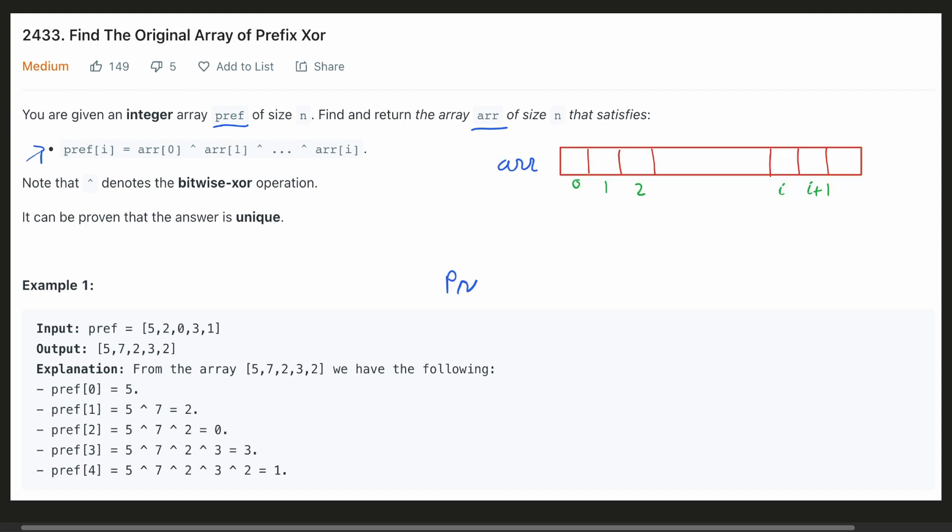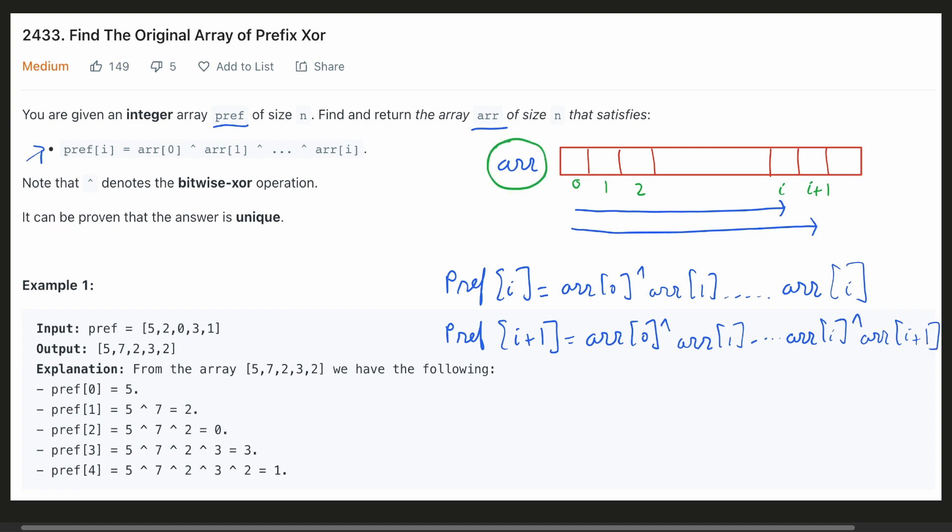For a given array, the ith element of the prefix array is calculated by xor of all the elements from the 0th index till the ith index. Similarly, the i plus 1 index of the prefix array is calculated by xor of all the elements from the 0th index till the i plus 1 index. And we have to return the array from which the prefix array was generated.